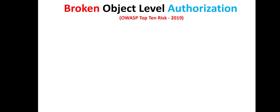In this video I will discuss Broken Object Level Authorization, a risk identified by the Open Web Application Security Project in 2009 when they published the top 10 risks against application programming interfaces. This vulnerability exists against the security of APIs.